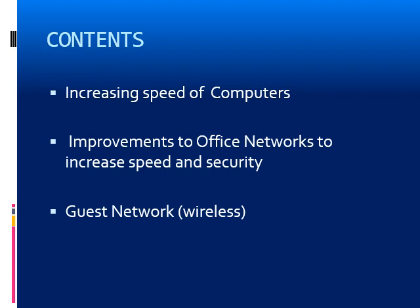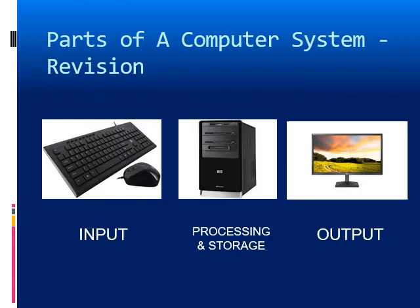I shall talk about hardware related parts and also suggest some changes through which we can improve the performance of our computer and computer network. I shall also discuss about wireless network security including guest network. Before we learn how we can improve the speed of our desktops or laptops, we first need to know about its parts. Any computer system has three parts: input, processing and storage, and then the output. We all know about the widely used input devices — the keyboard and the mouse — and also about the output devices, the monitor or the printer. Their performance cannot be increased.